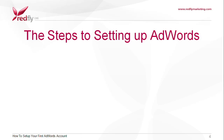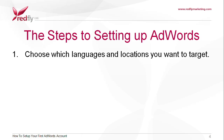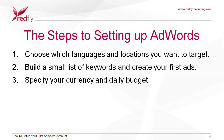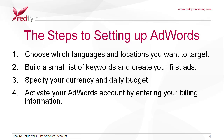There are four steps towards setting up your AdWords account. First, choose which languages and locations you want to target. Second, build a small list of keywords and create your first ads. Third, specify your currency and daily budget. Fourth, activate your AdWords account by entering your billing information.